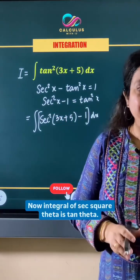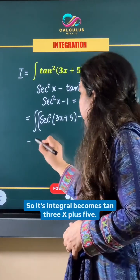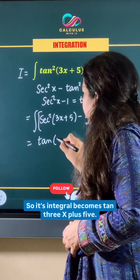Now integral of sec²θ is tan θ. So its integral becomes tan(3x+5).